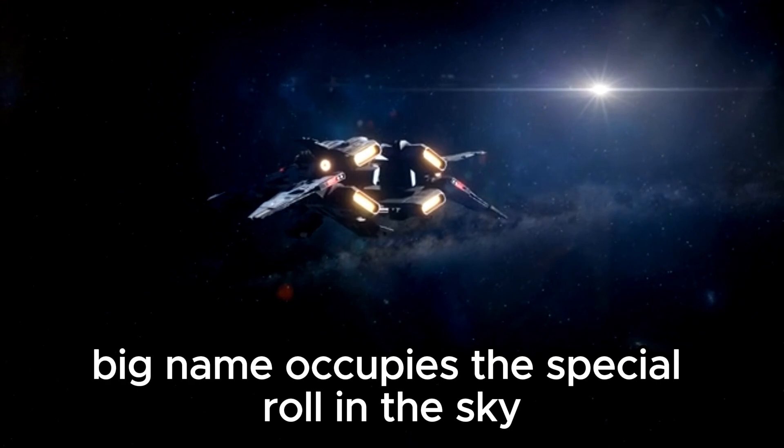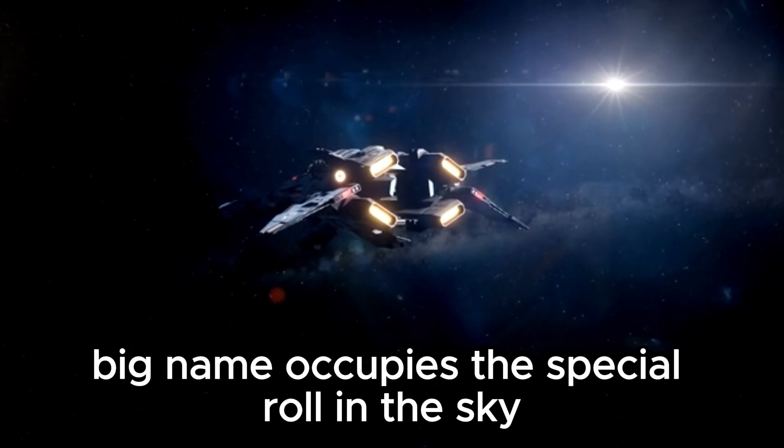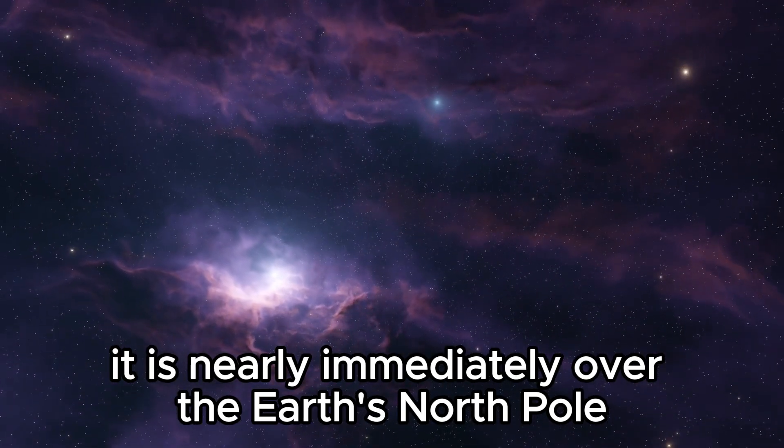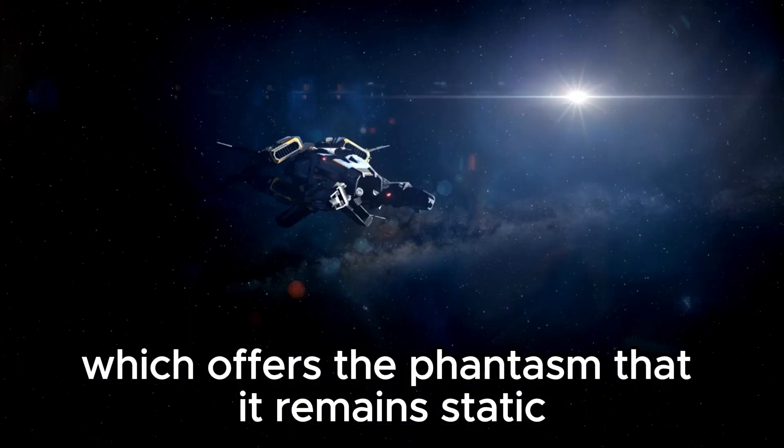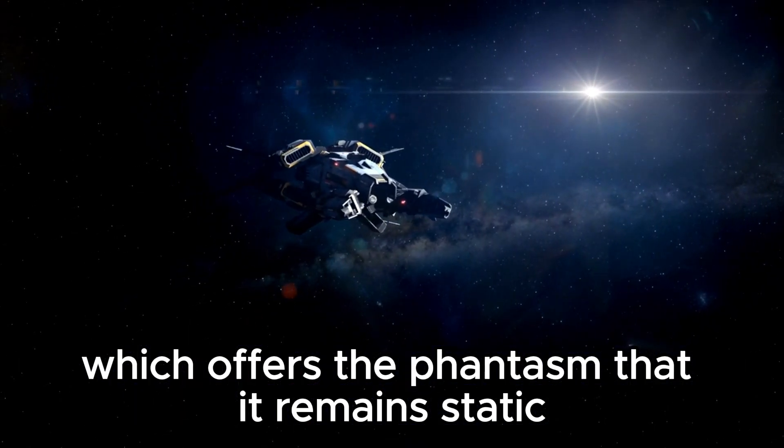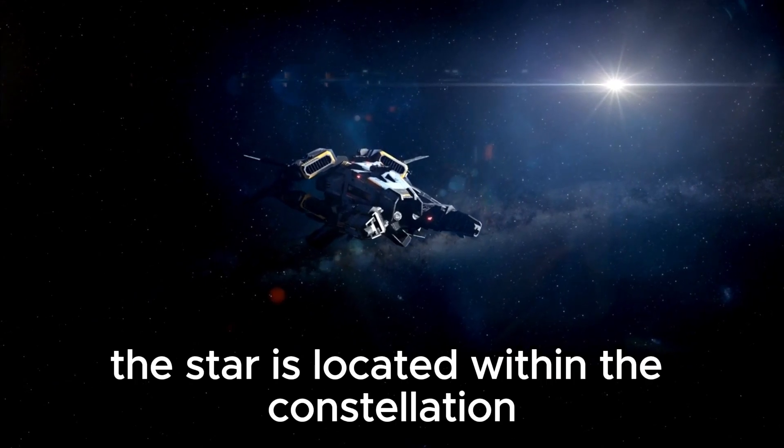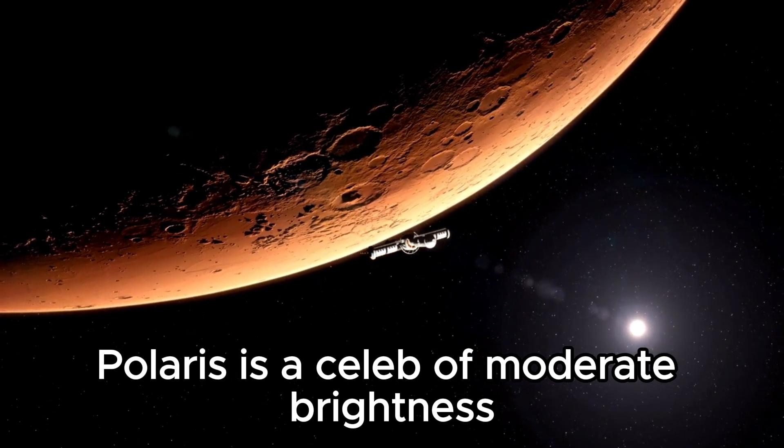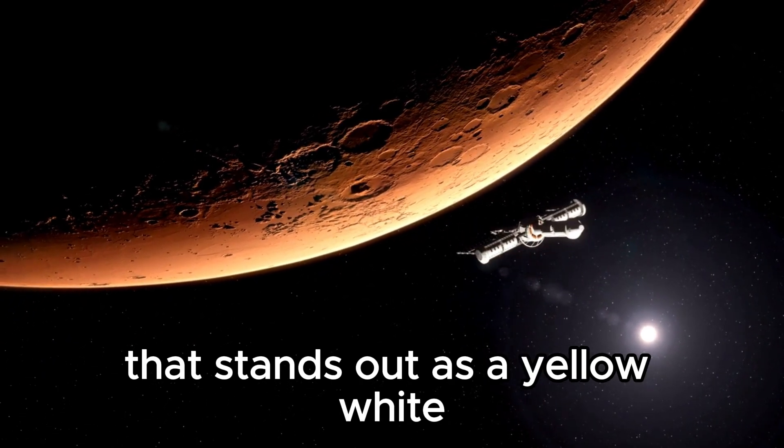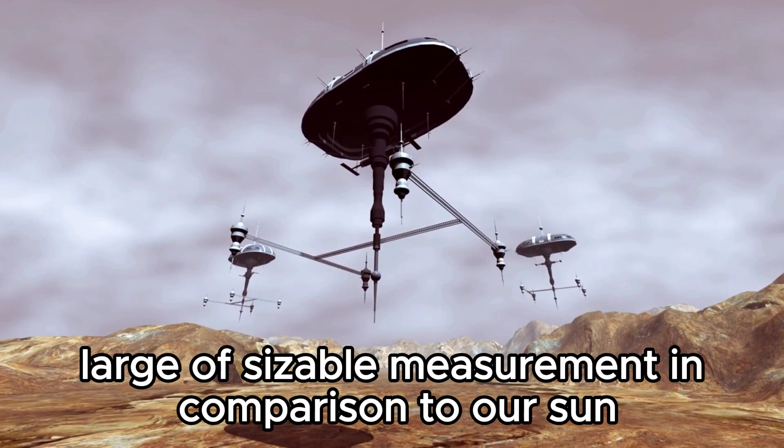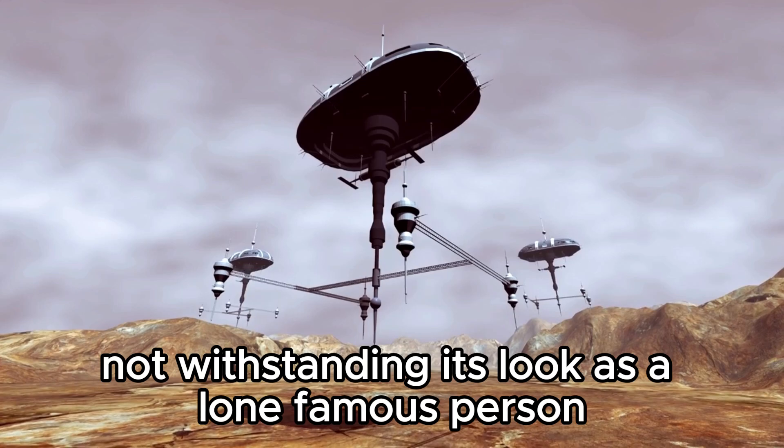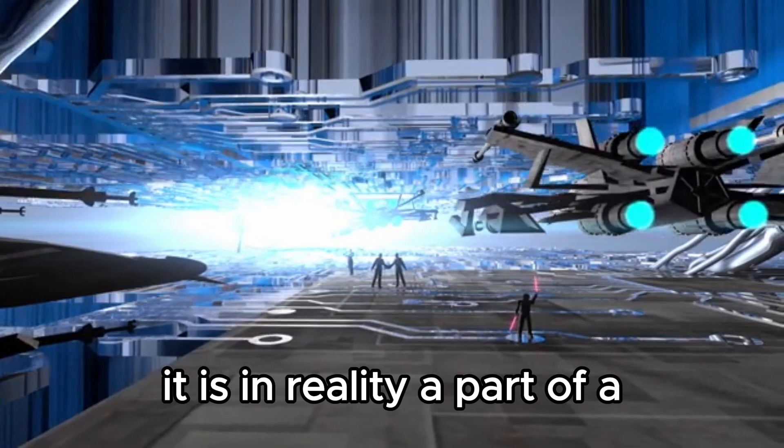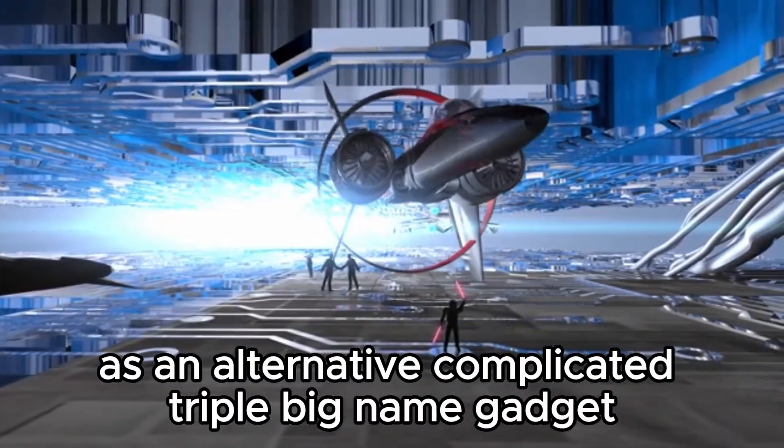Polaris, also known as the North Star or the Pole Star, occupies a special role in the sky because of its proximity to the celestial north pole. It is nearly directly over the Earth's north pole, which gives the illusion that it remains static in the northern sky. The star is located within the constellation Ursa Minor. Polaris is a star of moderate brightness that stands out as a yellow-white supergiant of considerable size compared to our sun. Despite its appearance as a lone star, it is actually part of a rather complex triple star system.